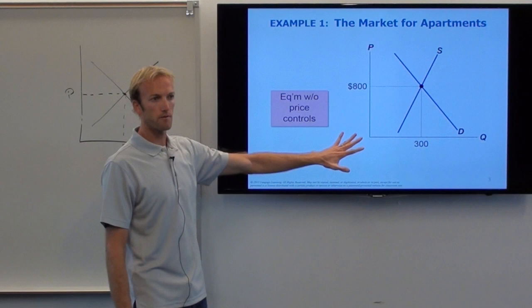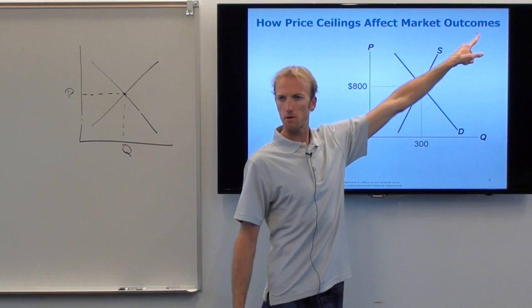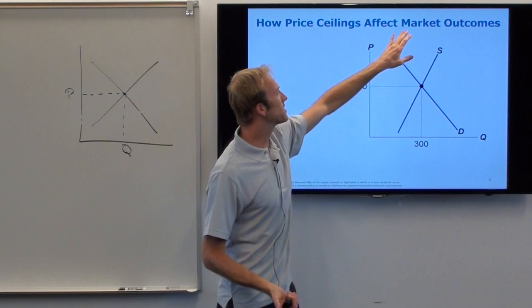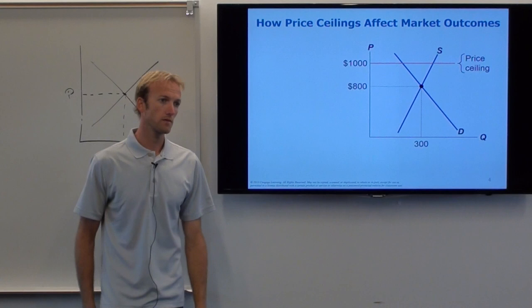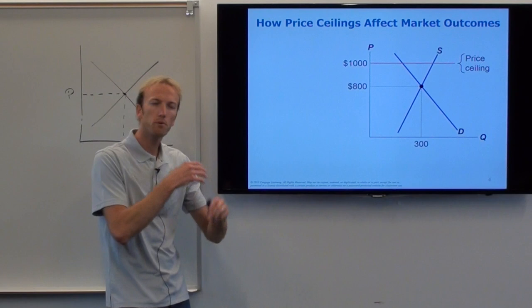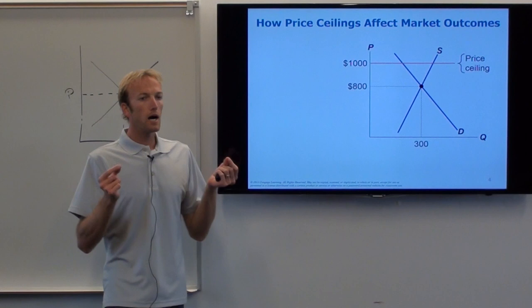Let's suppose the government institutes a price ceiling and we want to see how it affects the market outcome — meaning how it affects price and quantity. Let's suppose the government institutes a $1,000 price ceiling. What does a price ceiling mean? The highest that you can sell or rent this apartment is $1,000.